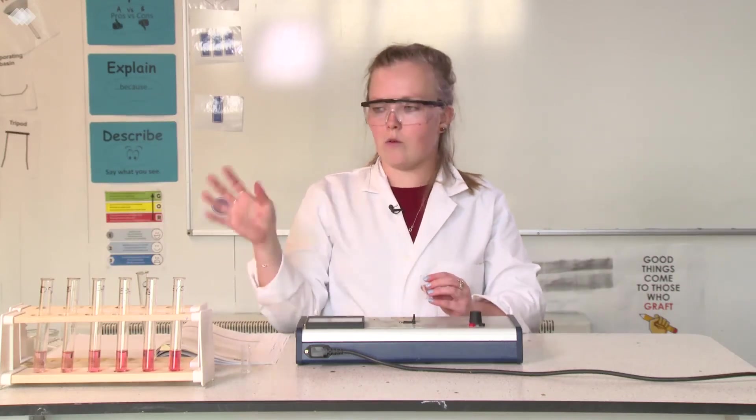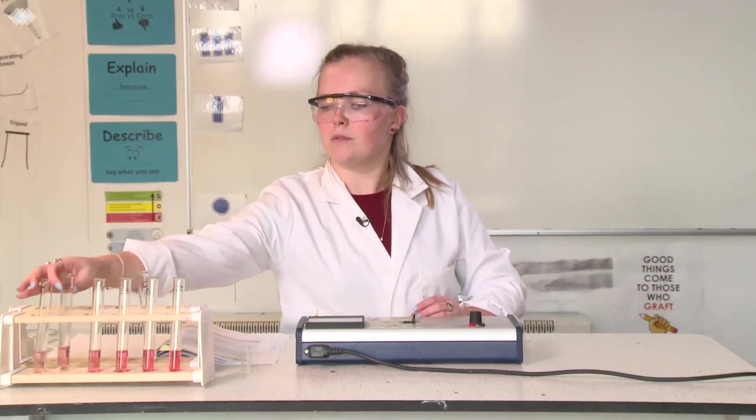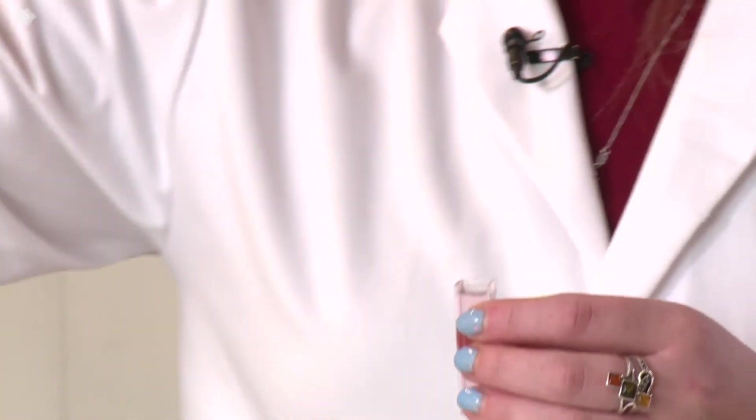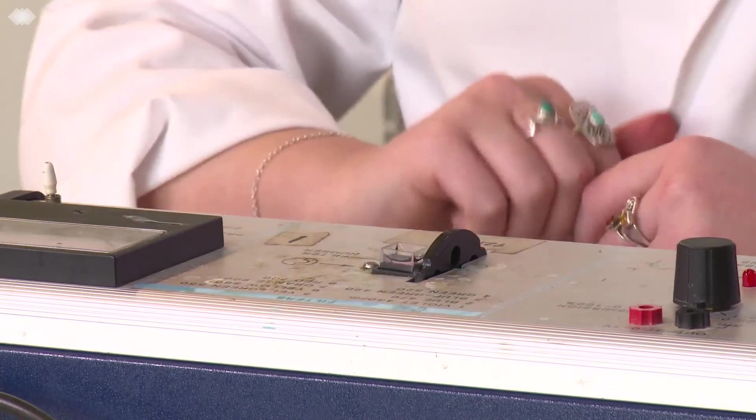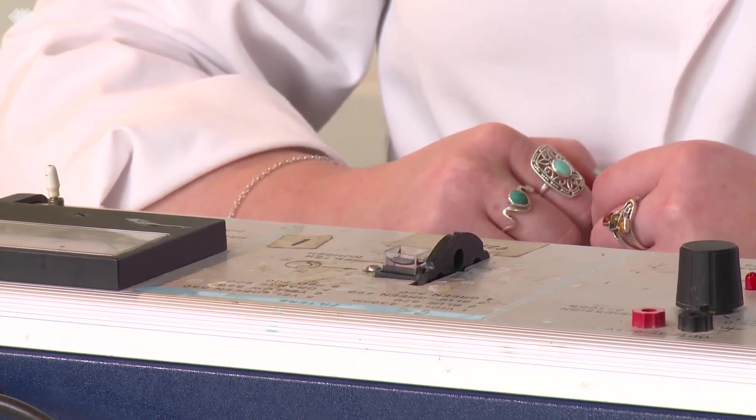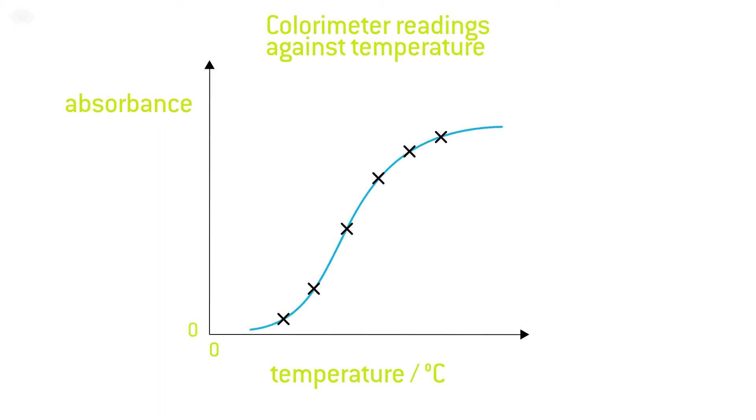Do the same with all of your temperatures. For example, 25. And that shows 0.1 absorbance. Record the colorimeter readings for all of your test tubes. You can then plot a graph of temperature against absorbance.